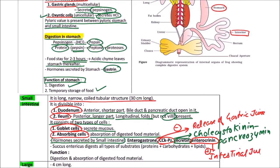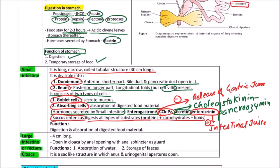Succus entericus, the intestinal juice, digests all types of substances because it has enzymes for proteins, carbohydrates, and lipids. The function of small intestine is digestion as well as absorption of digested material. The terminal part is rectum.